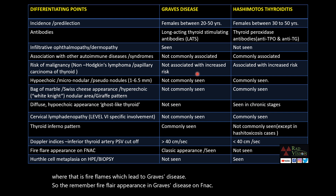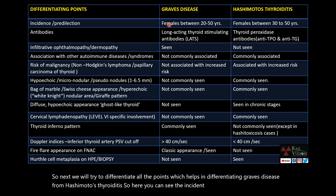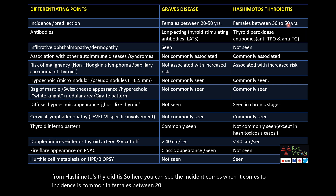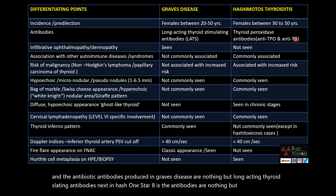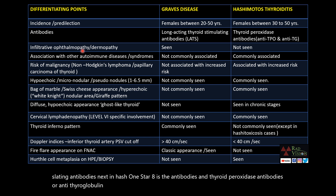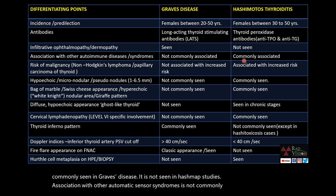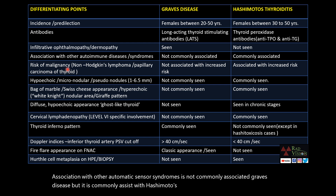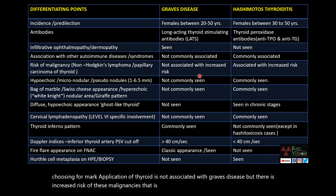Now let's differentiate the key points between Graves disease and Hashimoto's thyroiditis. Incidence: both are common in females — Graves between 20–50 years, Hashimoto's between 30–50 years. Graves disease produces long-acting thyroid stimulating antibodies, while Hashimoto's produces thyroid peroxidase antibodies or anti-thyroglobulin antibodies. Infiltrative ophthalmopathy or dermopathy is seen in Graves disease but not Hashimoto's. Association with other autoimmune diseases is more common in Hashimoto's. Risk of non-Hodgkin's lymphoma or papillary carcinoma of thyroid is increased in Hashimoto's thyroiditis but not in Graves disease.